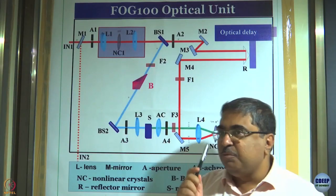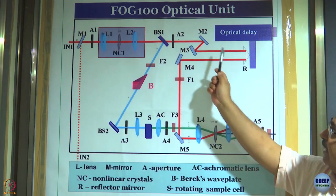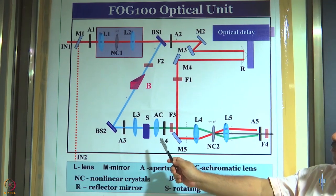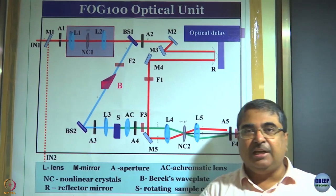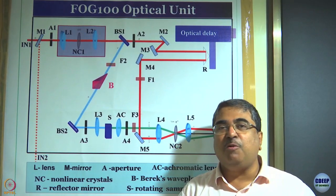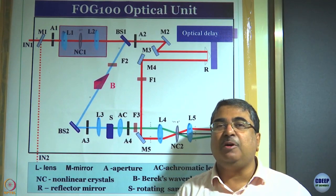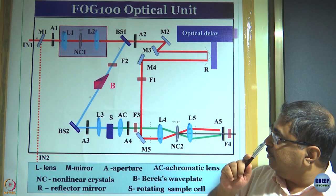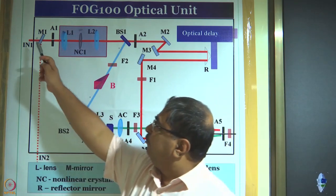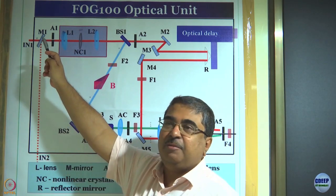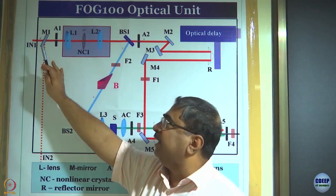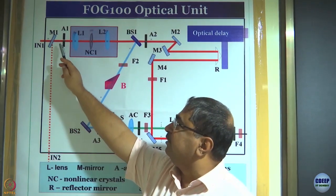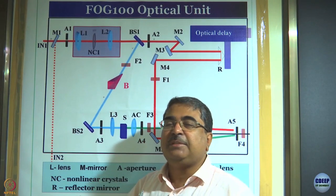I will first show you a diagram of the system, then we will go to the instrument. This is the layout of our optical unit for the FOG spectrometer. The spectrometer we use in our lab has the name FOG 100. It is from a company called CDP Corporation, which is based in Russia. We have red light, nominally 800 nanometers.